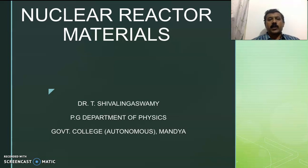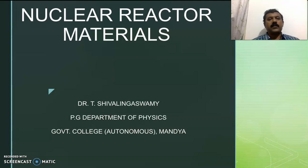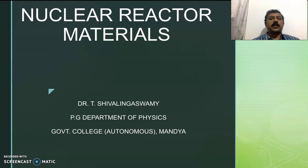Nuclear reactors can be broadly classified into two categories: fission reactors and fusion reactors. In fission reactors, heavy elements split into lighter elements by the bombardment of thermal neutrons. In fusion reactors, lighter elements combine to form heavy elements. But here in this video lecture, I will concentrate only on fission reactors.